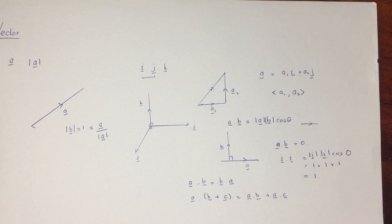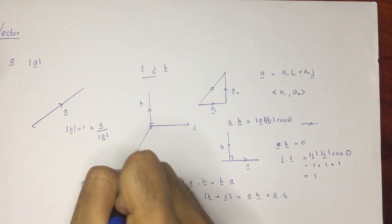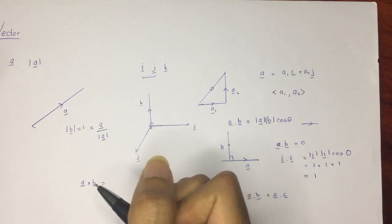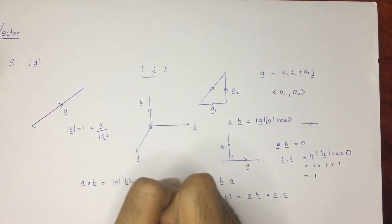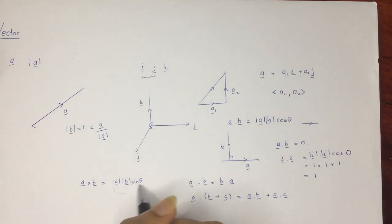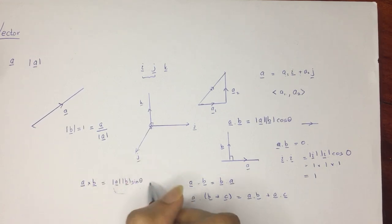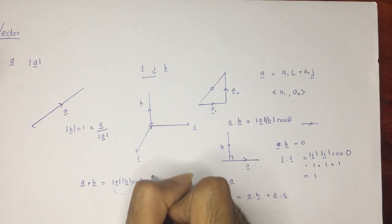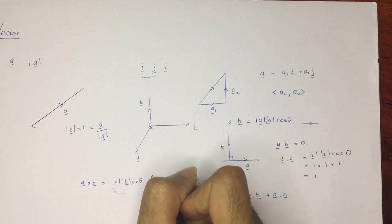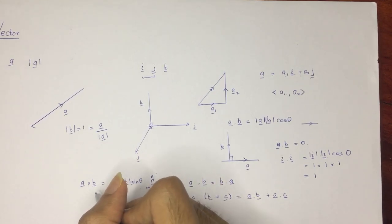After that, we learned about the vector product, which simply means the cross product. This is a little bit more difficult than the dot product or scalar product. When considering the cross product, the resultant of the two vectors is going to be a vector. The formula is |A||B|sin θ, followed by a unit normal vector to show the direction. The resultant vector of the cross product is perpendicular or normal to the plane containing A and B.